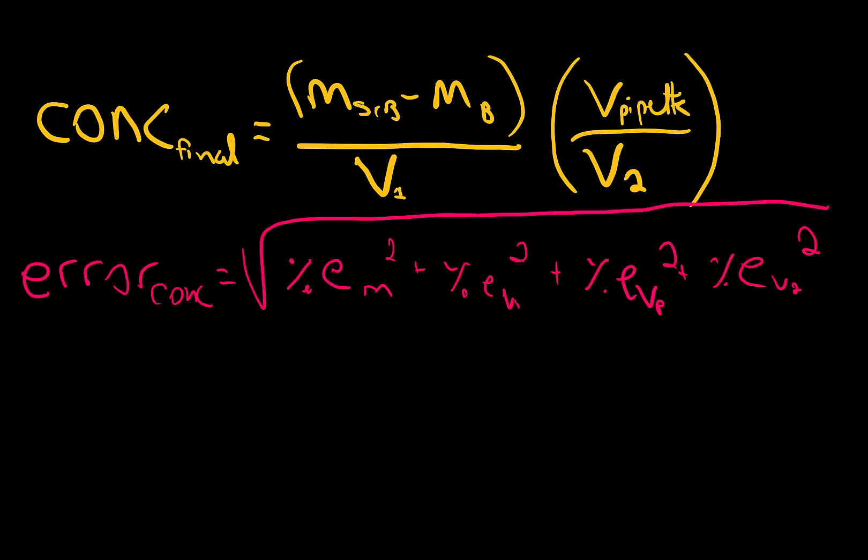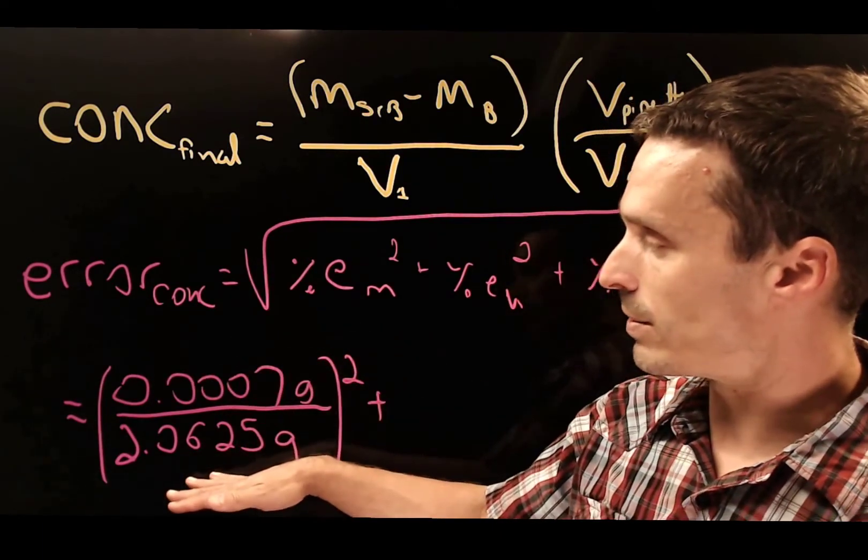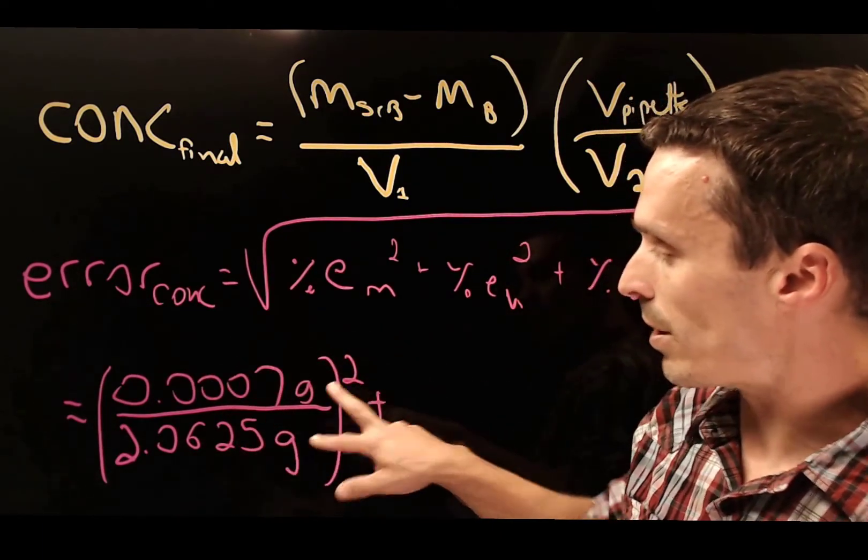The equation that we need to combine the error is to look at the relative error, or the relative standard deviation, squared. So we just calculated the absolute error in our weighing, and we can take a ratio of the two values, and this actually works out to be the relative error, of which you take a square.